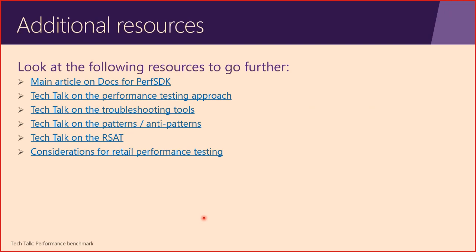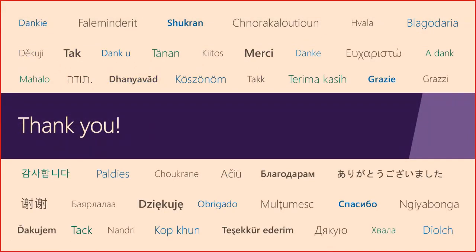On licensing requirements: you need a Tier 2, 3, 4, or 5 environment for the performance benchmark, which would be considered an add-on license. A Visual Studio Enterprise license is also required. If you're going with Azure DevOps load testing, there may be additional needs there. We hope this session helped demystify the performance benchmark, helped you understand how the perf SDK could be used, and was useful to you. Feel free to share your feedback and any other questions or topics you'd like us to cover in additional tech talks.